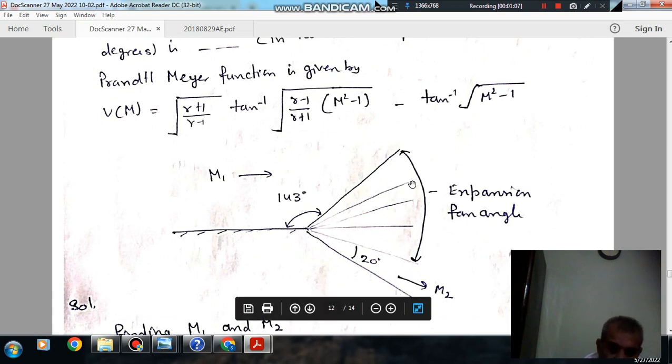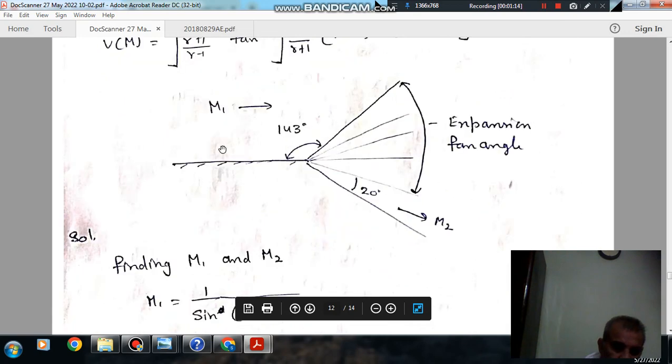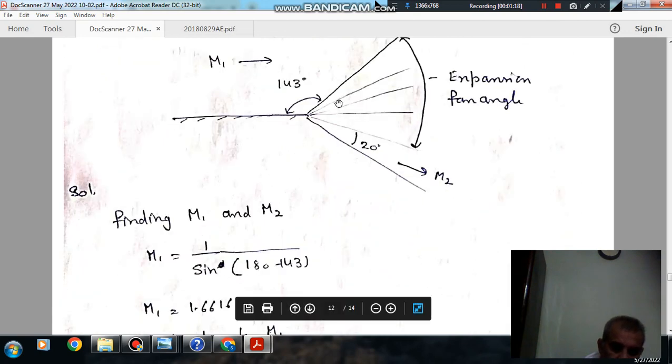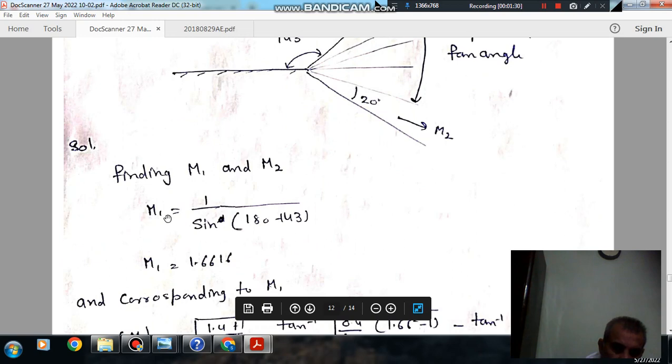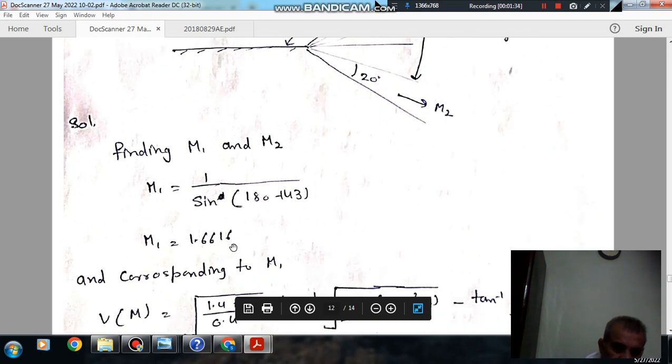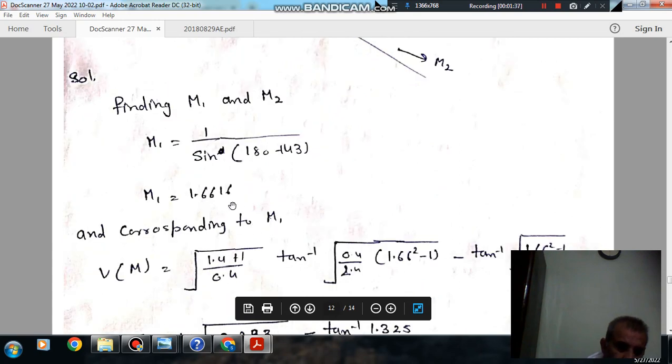This is your expansion fan angle. This is M2, this is M1. So finding M1, the direction of M1 is this and the leading edge of the expansion fan is this. So angle with the direction of M1 is 189 minus 143. So M1 is given by 1 divided by sine of (189 minus 143), that is 1.66.